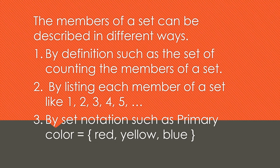By listing, you list all the elements of each set. Number three: by set notation — for example, primary colors: red, yellow, and blue. When we say set notation, you use the symbol with braces on the left and right side of the elements. That symbol is called braces.